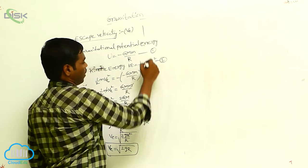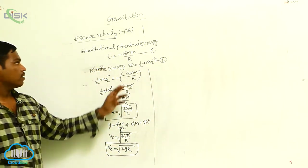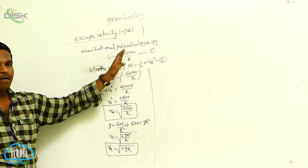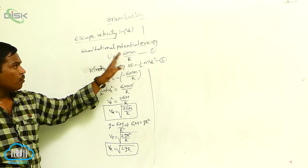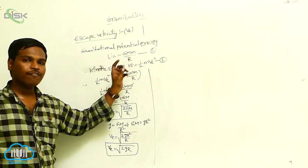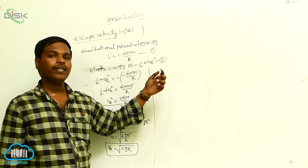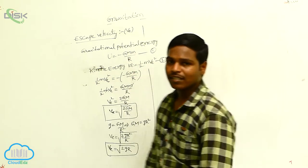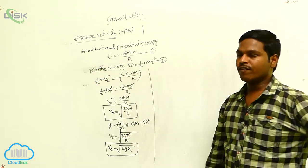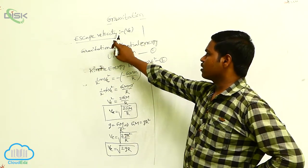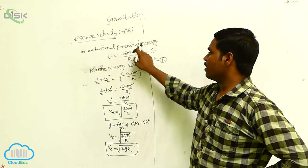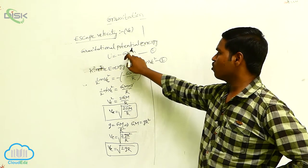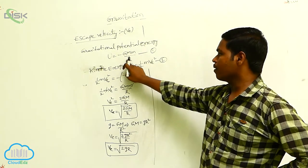This is the escape velocity. Escape velocity means the minimum amount of velocity required for an object to escape from the Earth's gravitational field. The gravitational potential energy U is equal to minus GM·m by R.